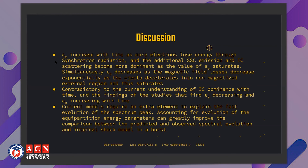These findings are contradictory to the current understanding of IC dominance with time, since IC dominance is expected to become less important over time. However, with epsilon_e increasing, IC actually starts to dominate more in the later afterglow — contrary also to the findings of Misra et al., who showed epsilon_e decreasing and epsilon_B increasing with time. This altered understanding of equipartition energy parameters can be particularly helpful as the extra element needed by current models to explain the fast evolution of the spectrum's peak observed through the break frequencies, greatly improving the comparison between predicted and observed spectral evolution in internal shock models and leading to more accurate models.